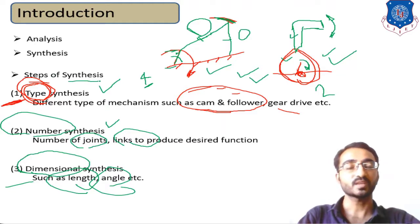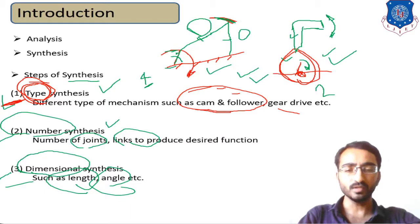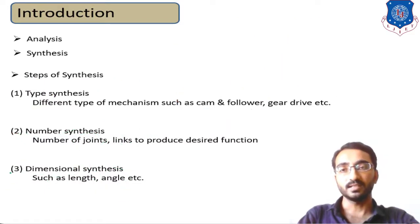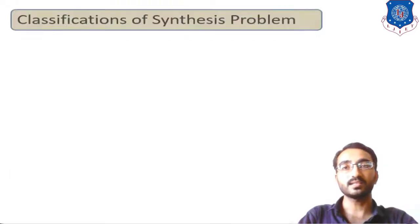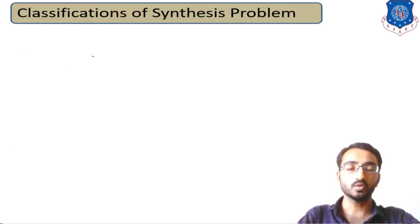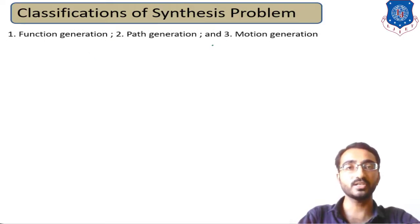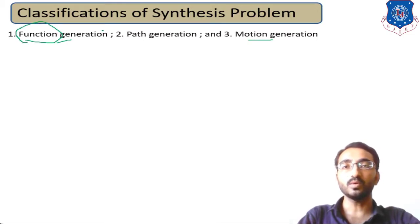Before this session, you might have thought that while designing any mechanism we always calculate lengths directly, but dimensional synthesis comes only at the third stage; before that, the two stages are type synthesis and number synthesis. In GTU examinations, these three terms are individually asked for three to five marks each. Now moving to the next topic: the classification of synthesis problems, which are classified into mainly three types — function generation, path generation, and motion generation.